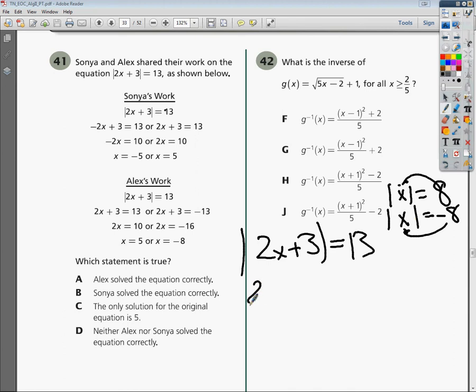So I'm going to write 2x plus 3 down twice. The only thing I'm going to change is just like up here where I adjusted, because the 8 and negative 8 being plugged in for x is okay, I need to plug in 13 and negative 13. Then I can solve them out, which Alex did perfectly.